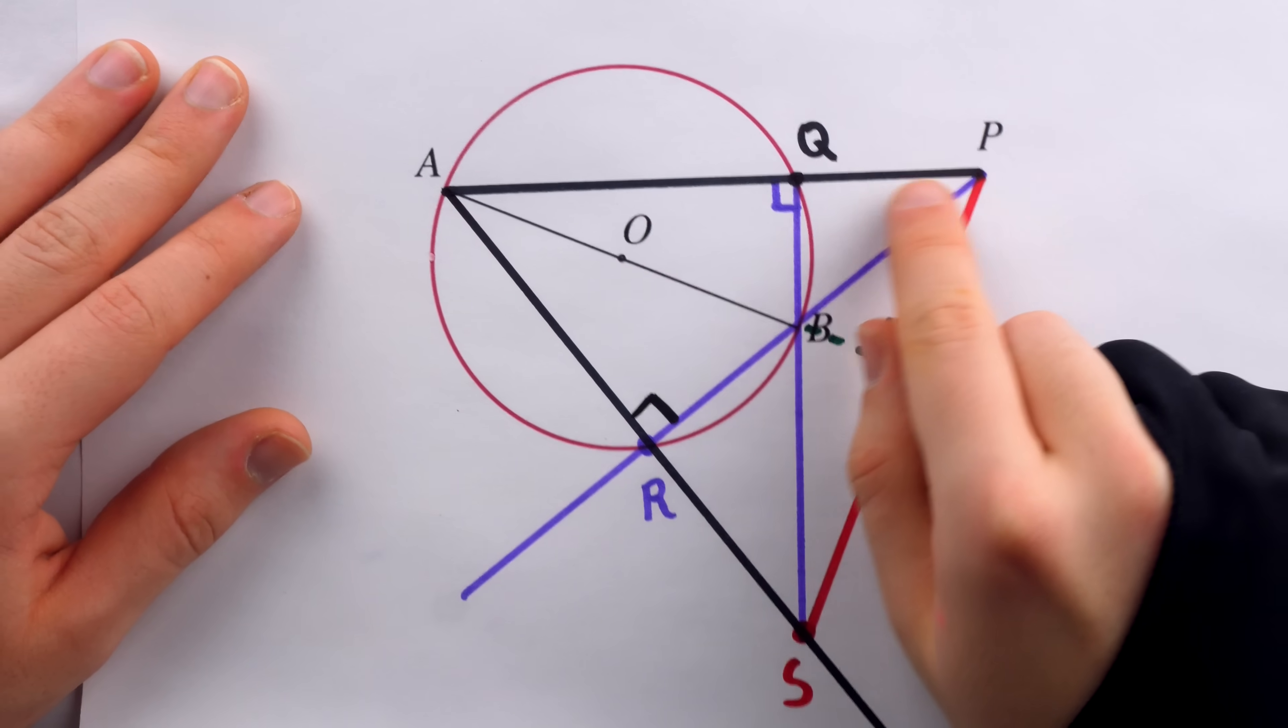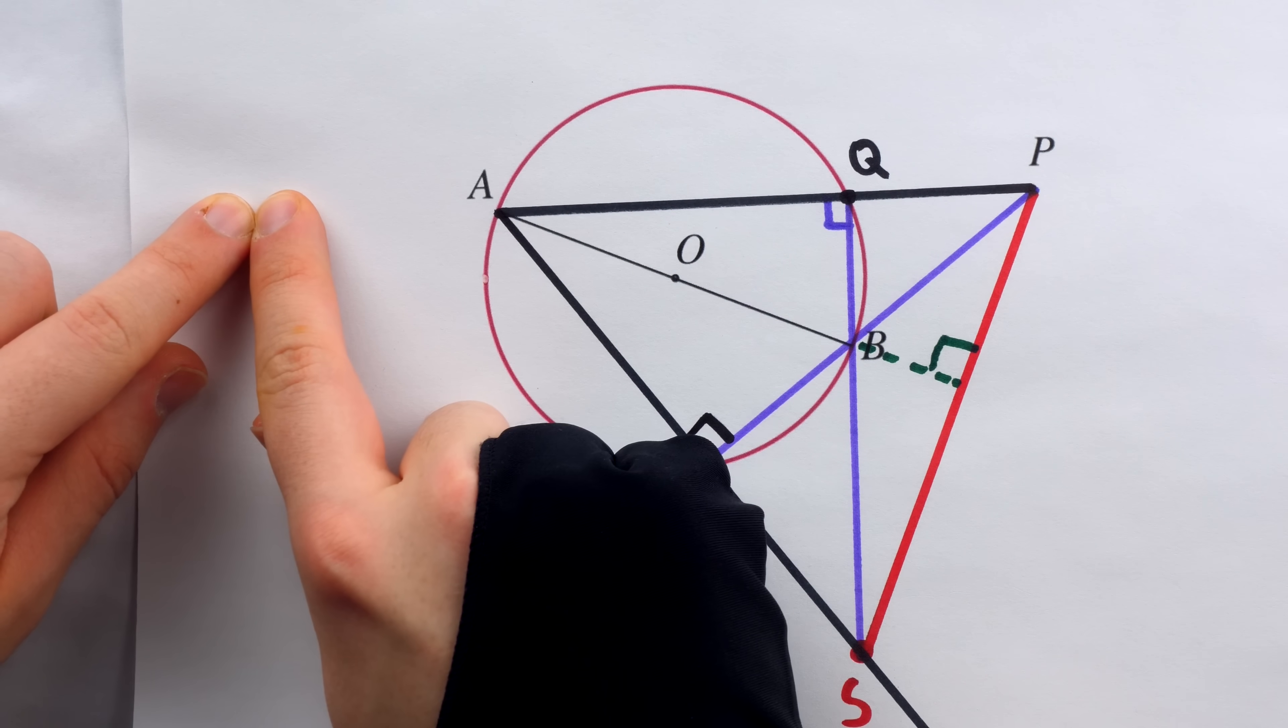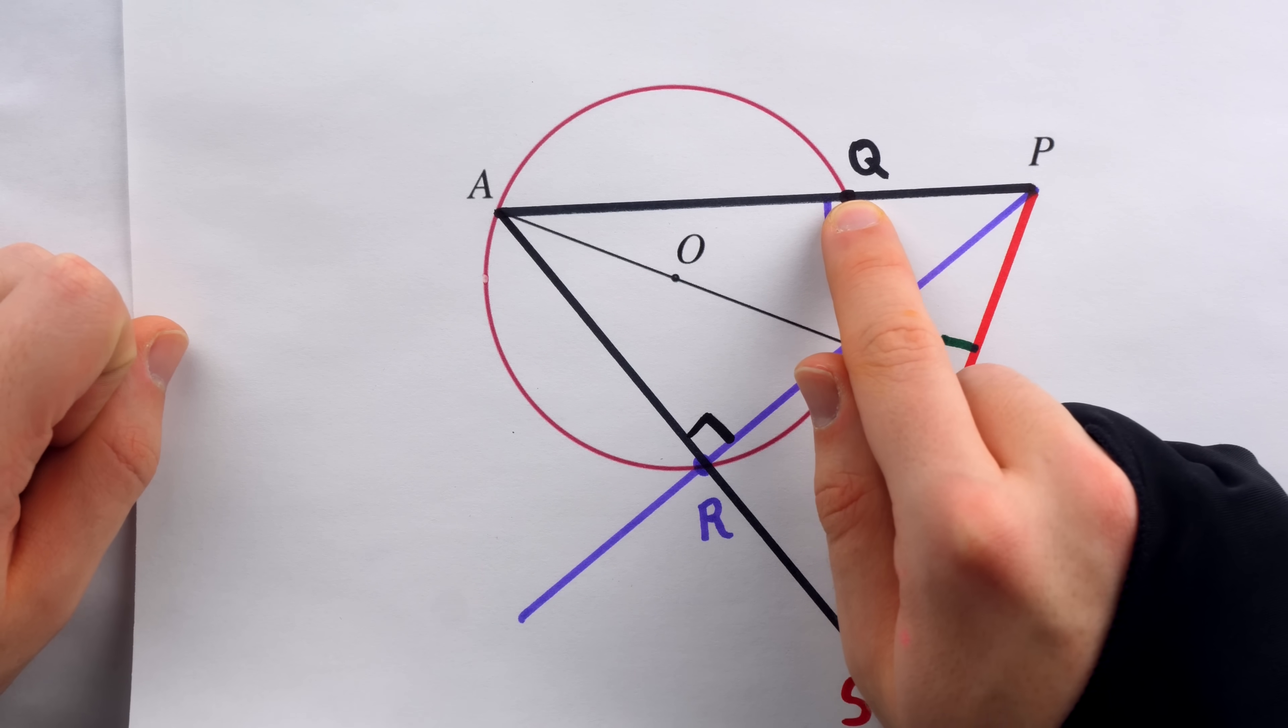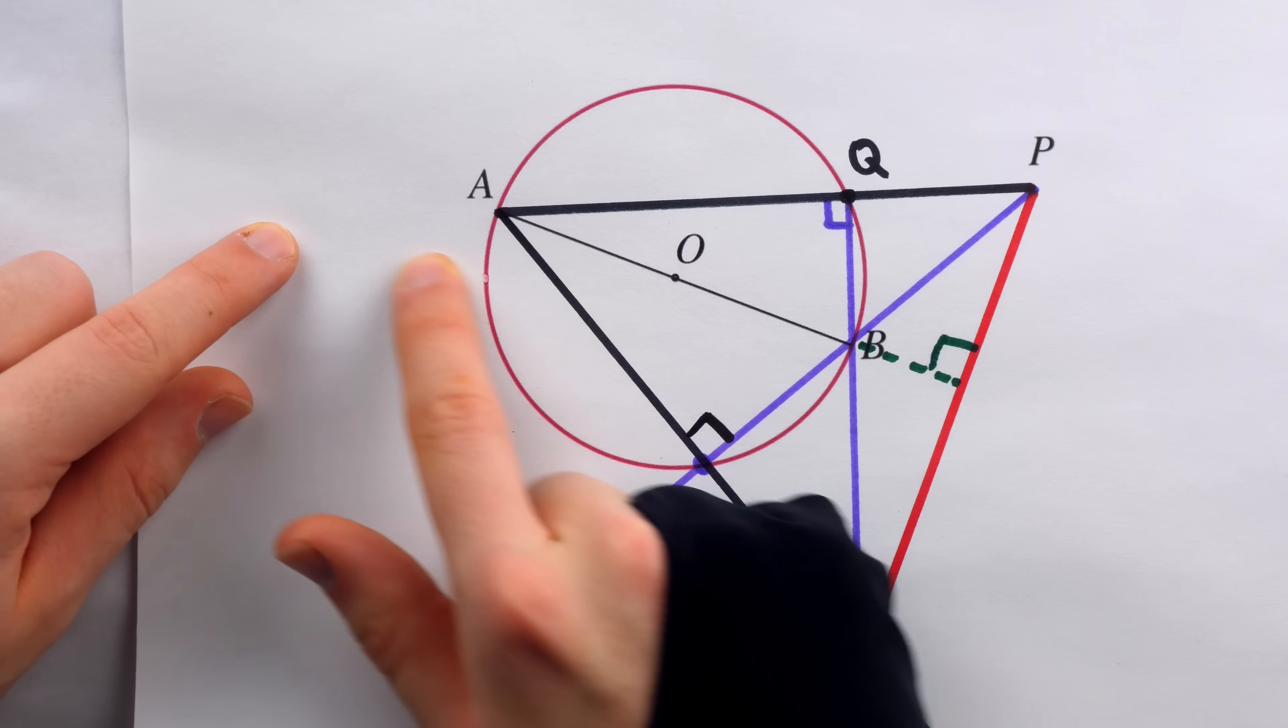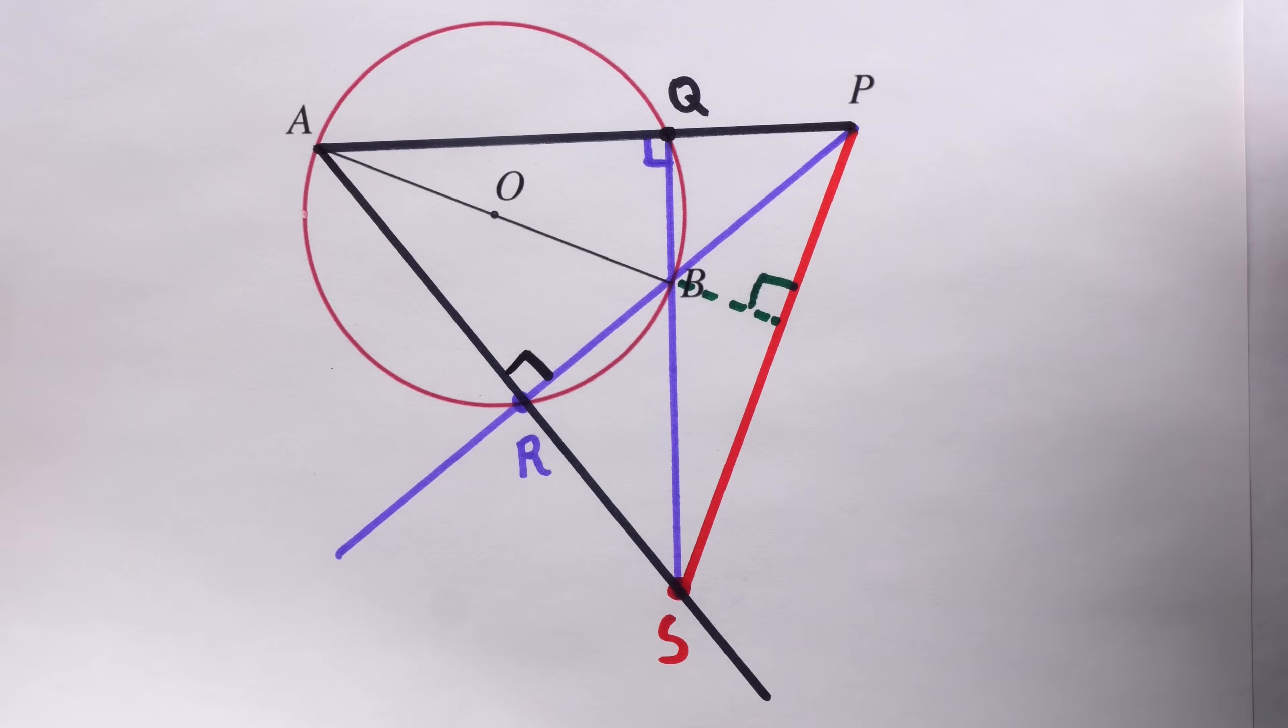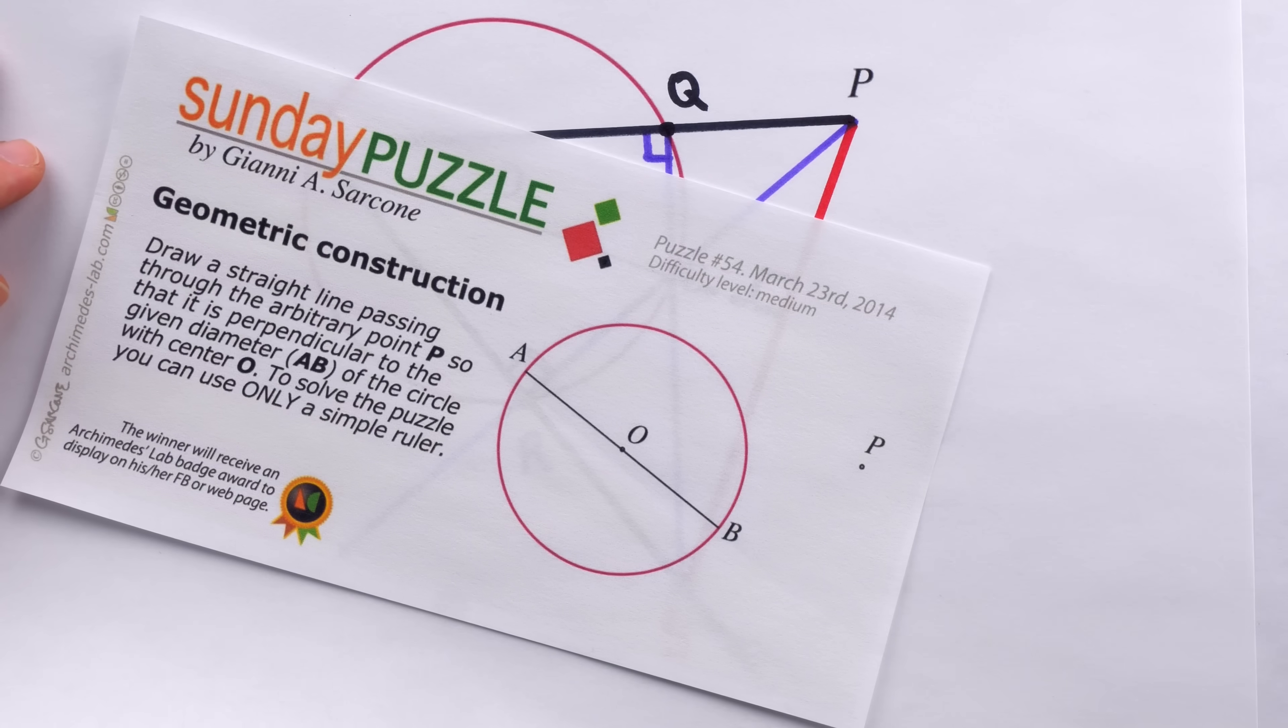Now, if the given point P had been over here, then drawing a line from A wouldn't have created that additional point of intersection that we needed. But in that case, we could just draw the original line from B, and we would have got a point of intersection just like we needed. Well, that sure was a hoot and a half. There's nothing like a good geometrical Sunday doodle.